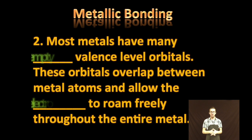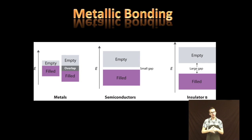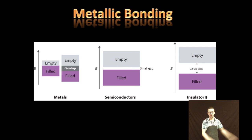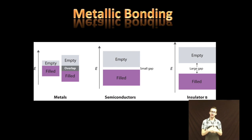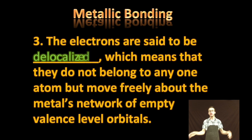Most metals have many empty valence level orbitals, and these orbitals overlap between metal atoms and allow the electrons to roam freely throughout the entire metal sample. Notice that your metals on the left have this very nice overlap that occurs between their valence level orbitals, and so the electrons sort of float between those. Think about how important it is for some characteristics of metallic bonding to have those orbitals overlap versus having gaps in between.